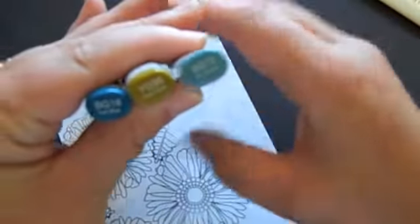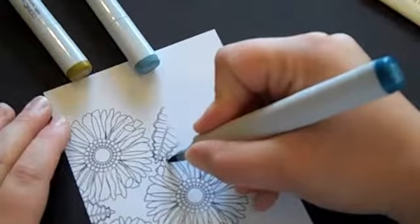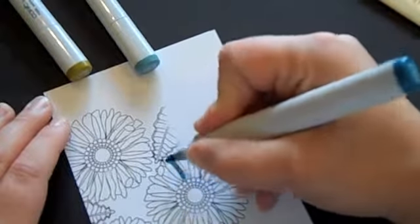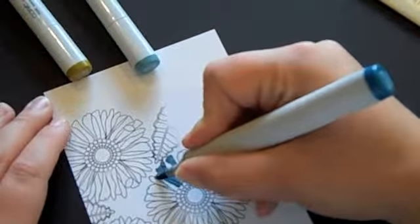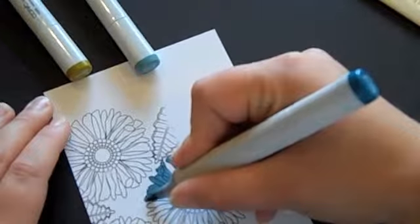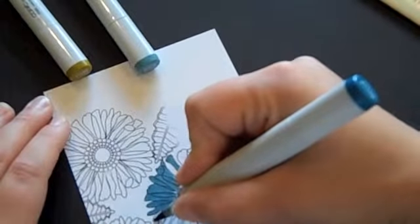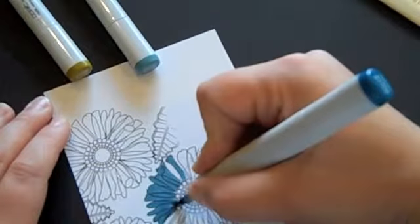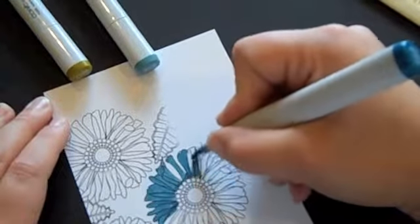And I'm going to take some Copics. I'm using BG72 and YG95 and BG18. I'm going to use BG18 for the majority of the large daisies. And I'm not going to do any fancy shading or anything, I'm just going to add a little color to the petals. And remember, you only have to do what's exposed within the boundaries of that triangle. So you definitely do not need to color more than you have to.